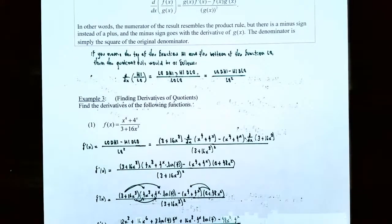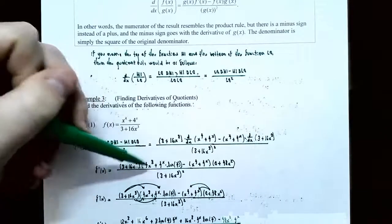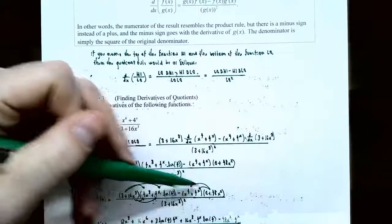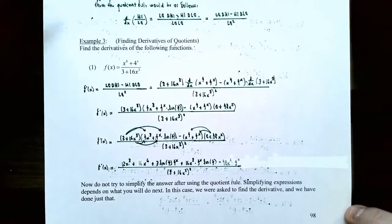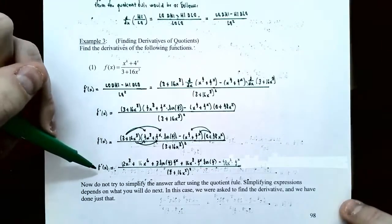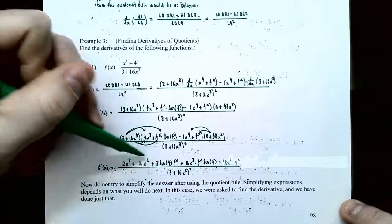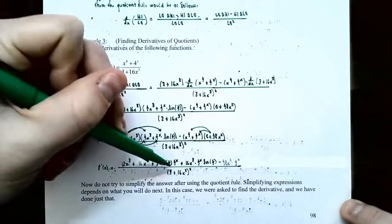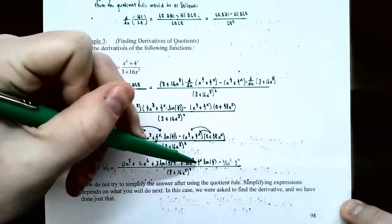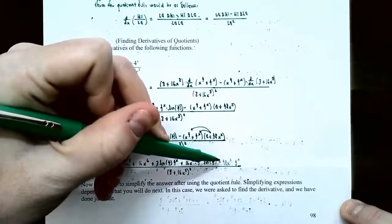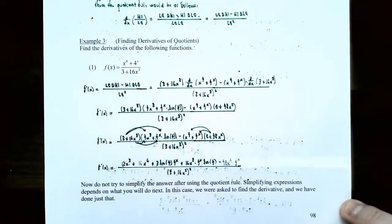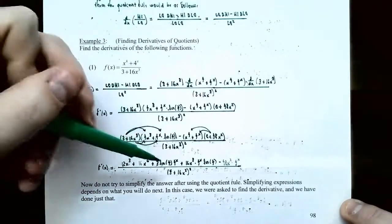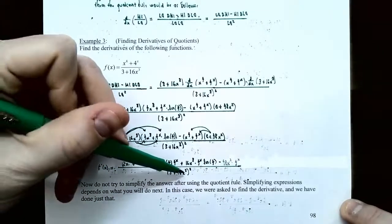Now simplify further. You have two terms here and two terms there, so use the FOIL method to multiply out, and distribute 48x squared to both terms. After combining like terms, f prime of x is: 12x cubed plus 16x to the sixth, plus 3 times natural log of 4 times 4 to the x power, plus 16x cubed times 4 to the x times natural log of 4, minus 48x squared times 4 to the x, all divided by 3 plus 16x cubed, all squared.